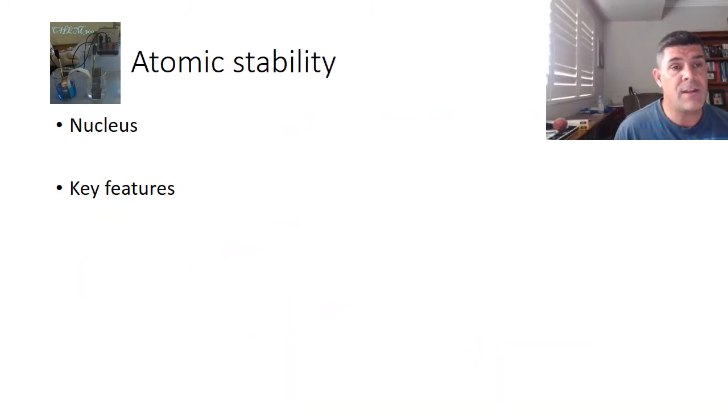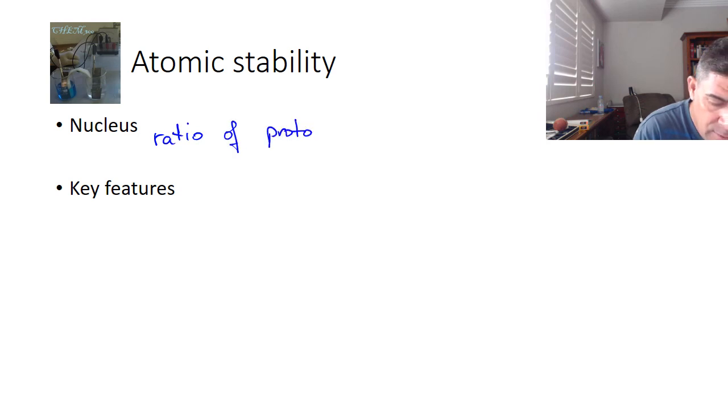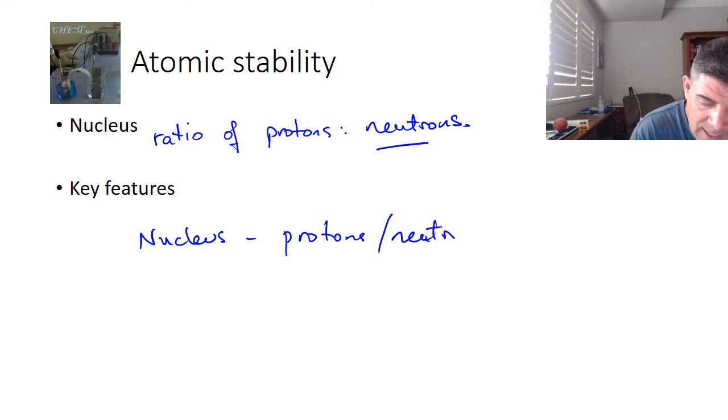So one of the important things when we're assessing atomic stability is the nucleus, and more specifically the ratio of protons to neutrons. At this point in time, we need to be aware of the fact that the nucleus is where the protons and neutrons are, and we need to investigate what's happening in terms of those ratios if we're going to look at stability. And we'll do more of this in class and in the next video. Thanks for watching.